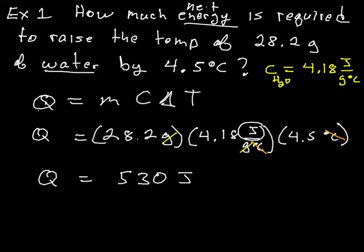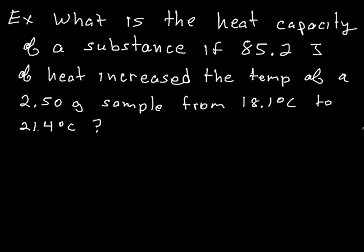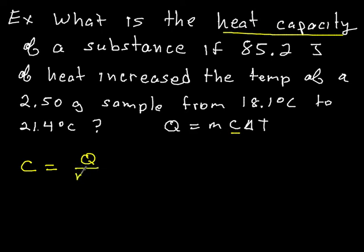Another kind of problem that you will often see would be a problem where you are asked to find the heat capacity of an unknown sample. So what is the heat capacity of a substance if 85.2 joules of heat increase the temperature of a 2.5 gram sample from 18.1 degrees to 21.4? And so your basic equation is Q equals MC delta T. In this case, we are looking for the heat capacity. That is what we want to know. So we are looking for C. So we are going to just rearrange this equation for C. And you will get C equals Q over M delta T.